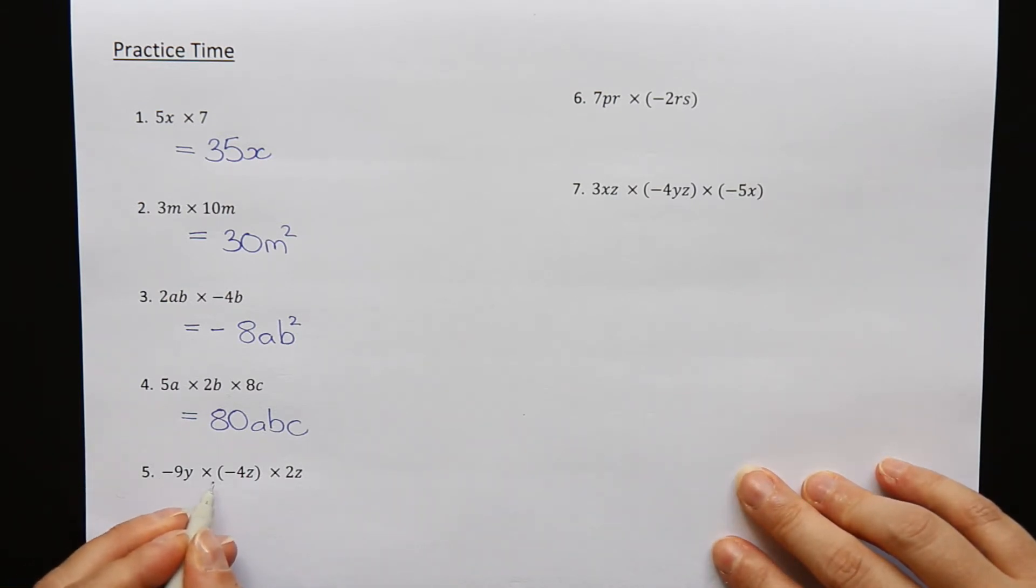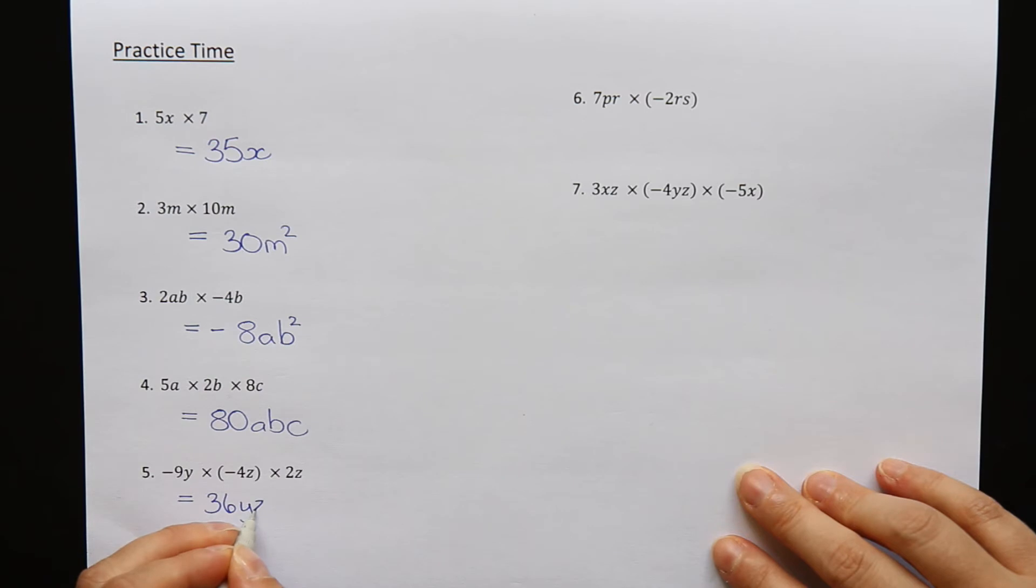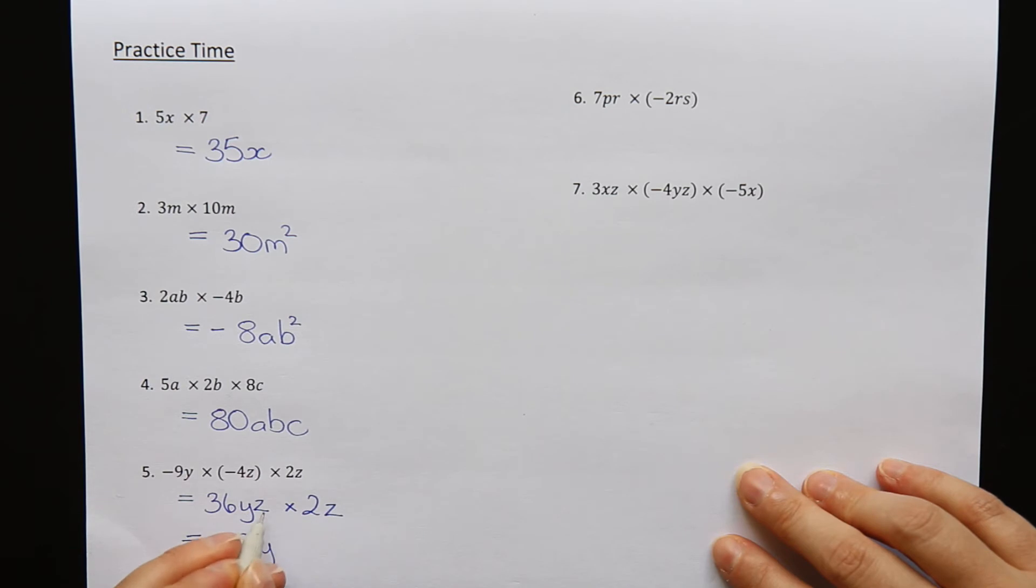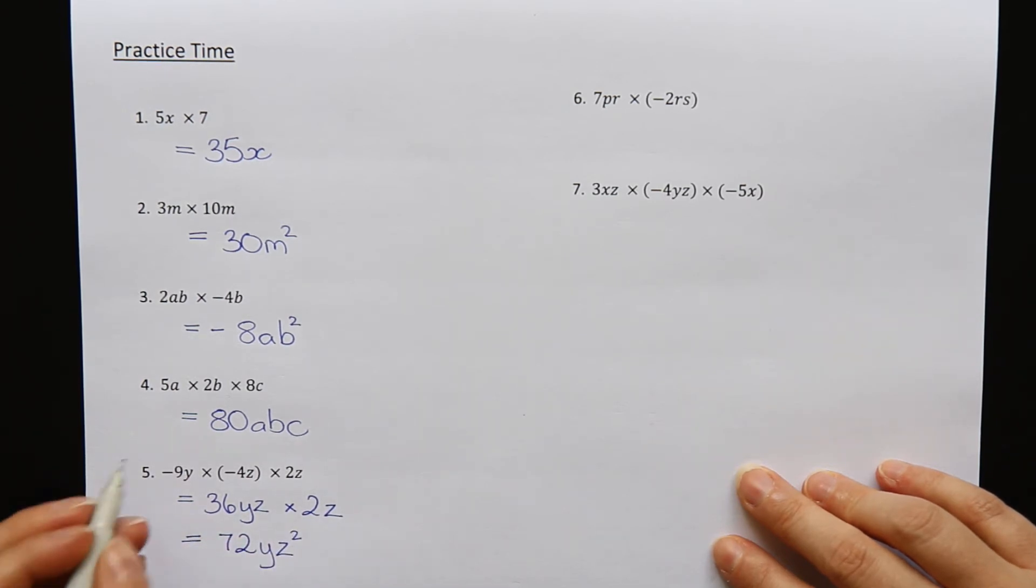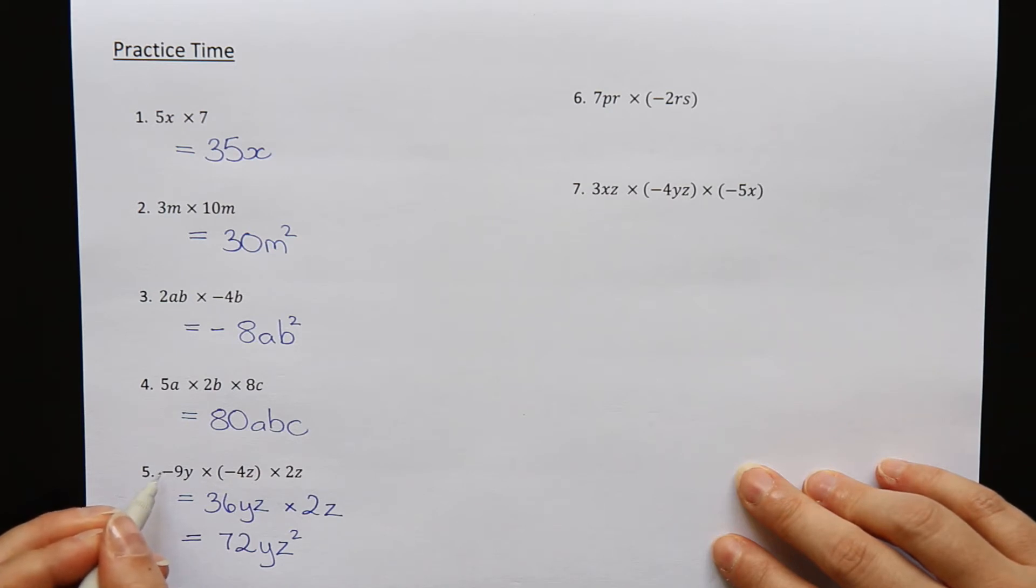Question 5: minus 9y times minus 4z times 2z. Let's look at the numbers. Minus 9 times minus 4—a minus times a minus will make a positive. 9 times 4 is 36. I have a y and a z from the first two terms. I still need to multiply that by the 2z. 36 times 2 is 72. There's y and 2z, so z squared.